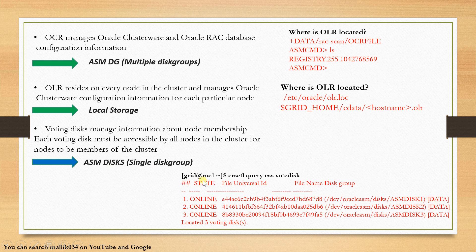For example, if I am planning to have my Voting Disk in the data disk group, the disks inside the data disk group hold my Voting Disk. If I have data as my disk group, and inside data I have ASM disk one, disk two, disk three — all three disks have my three Voting Disks. But all three disks belong to my data disk group. I cannot have one in data and one in RECO; it should be in only one disk group. OLR will obviously be in my local storage.